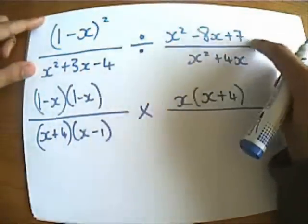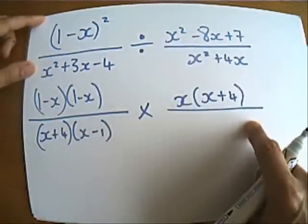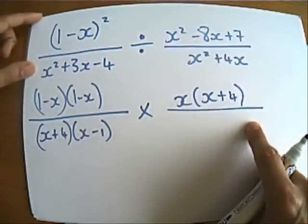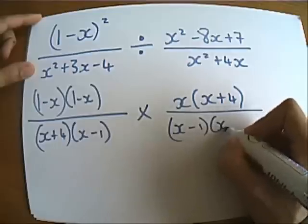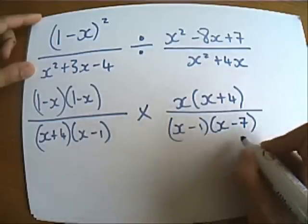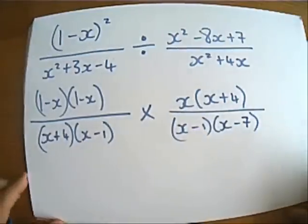And this x squared minus 8x plus 7, I'm now going to write on the bottom on the denominator, but again I'm going to factorise it, and I think that's going to be x minus 1, x minus 7. Let's just check that. Yeah, that all worked.